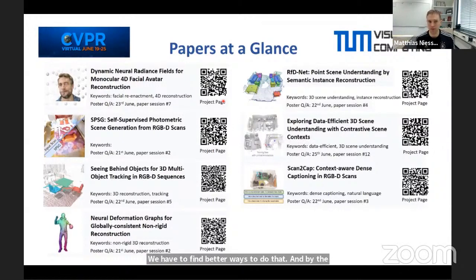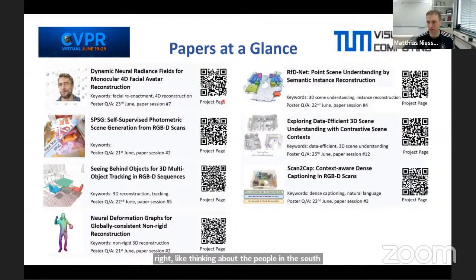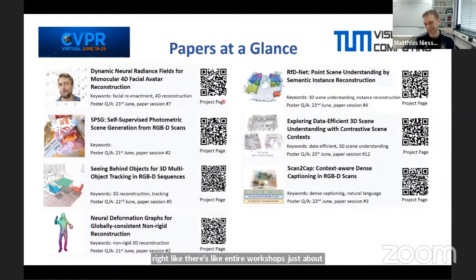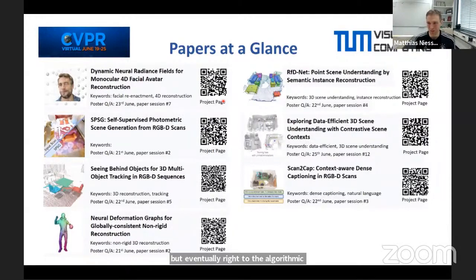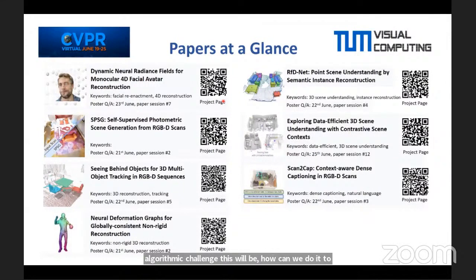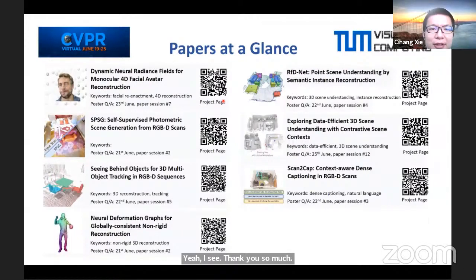This is not just a problem for deepfake detection — it's a problem for any arbitrary classifier. Think about the self-driving car community, training during the day and testing during the night when it's rainy or foggy — entire workshops are dedicated to these problems. People try to throw as much data at it as possible, but ultimately the algorithmic challenge is how to generalize better without brute-force augmentation. We have to look at generalizability methods, domain transfer methods, and alternative formulations that help us generalize features better than a naive classifier. Thanks again for your great talk.